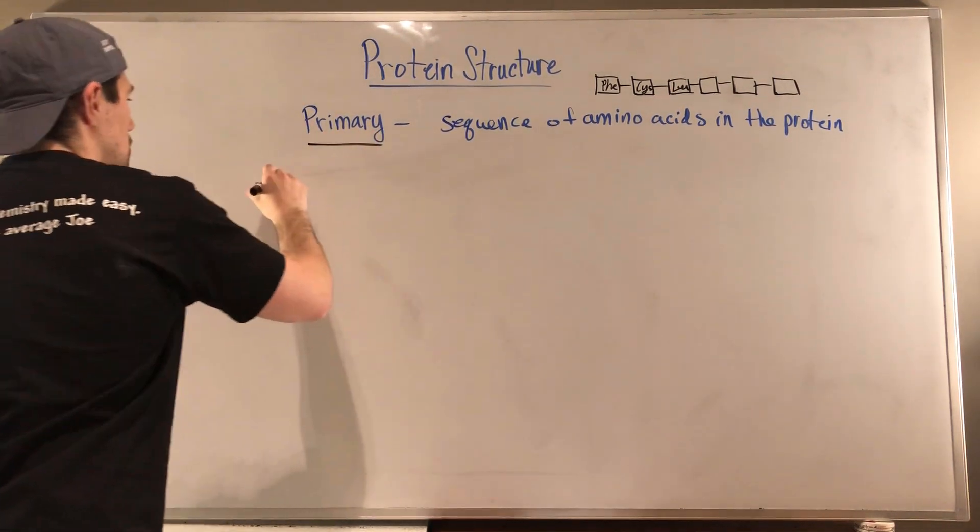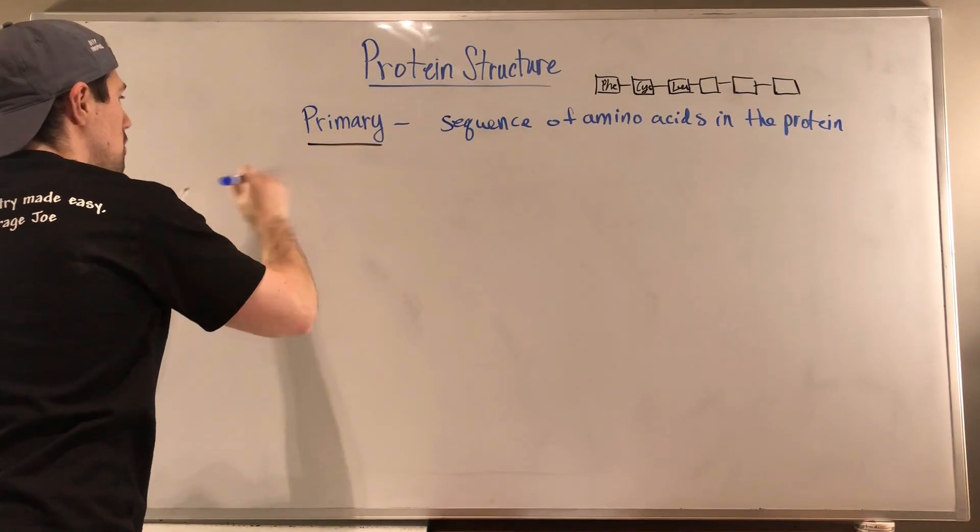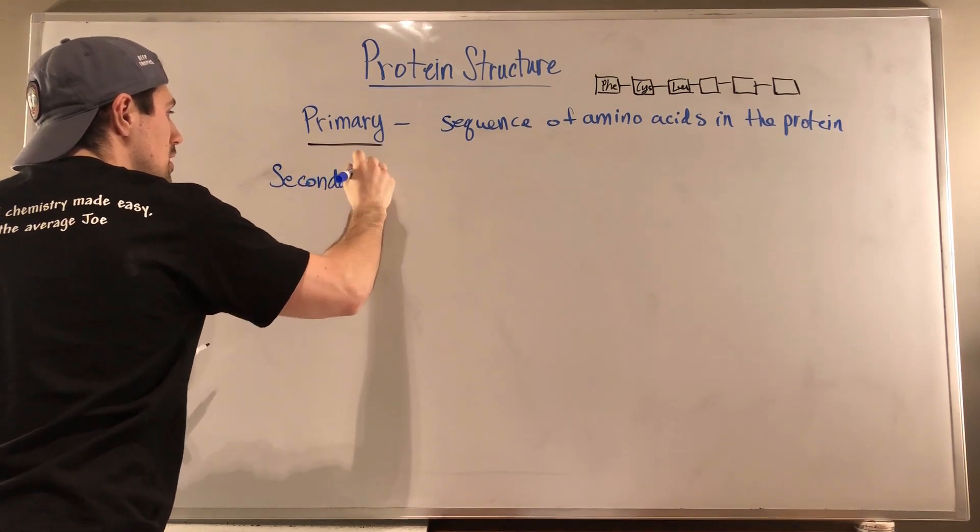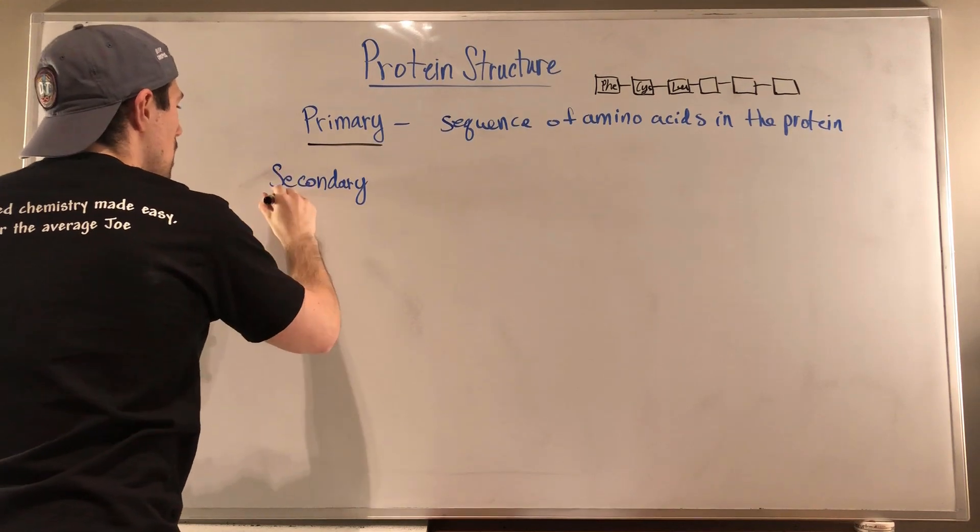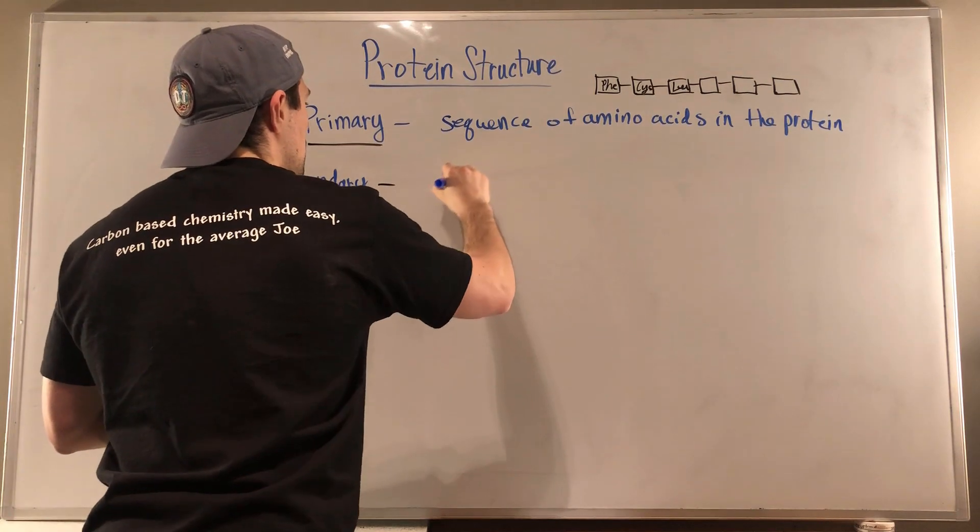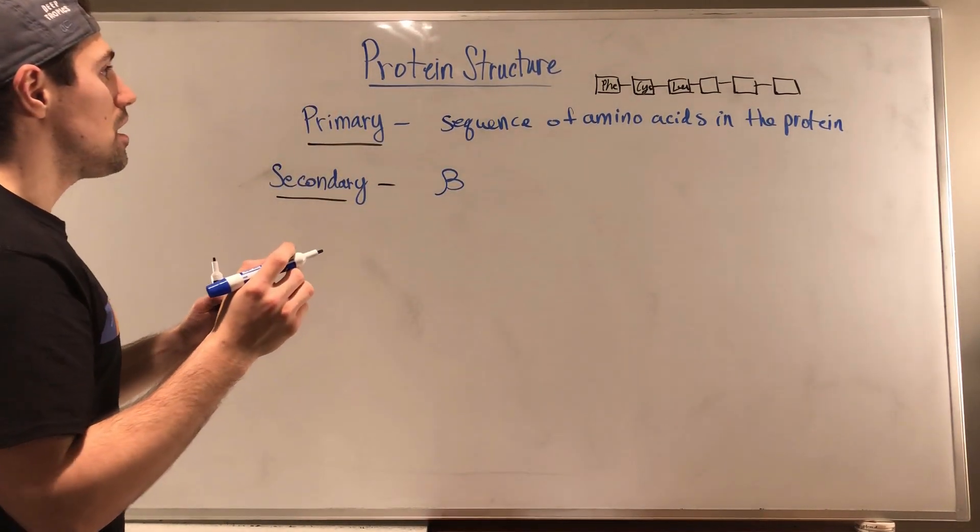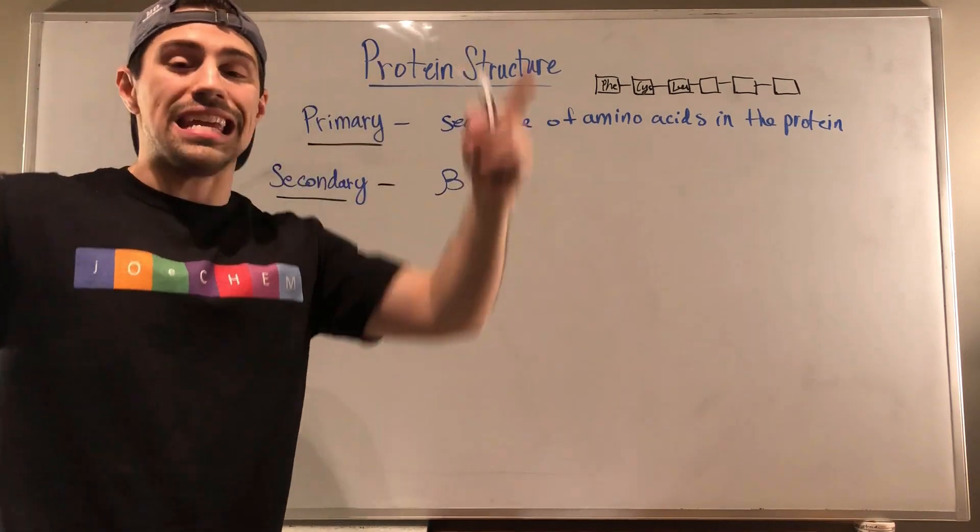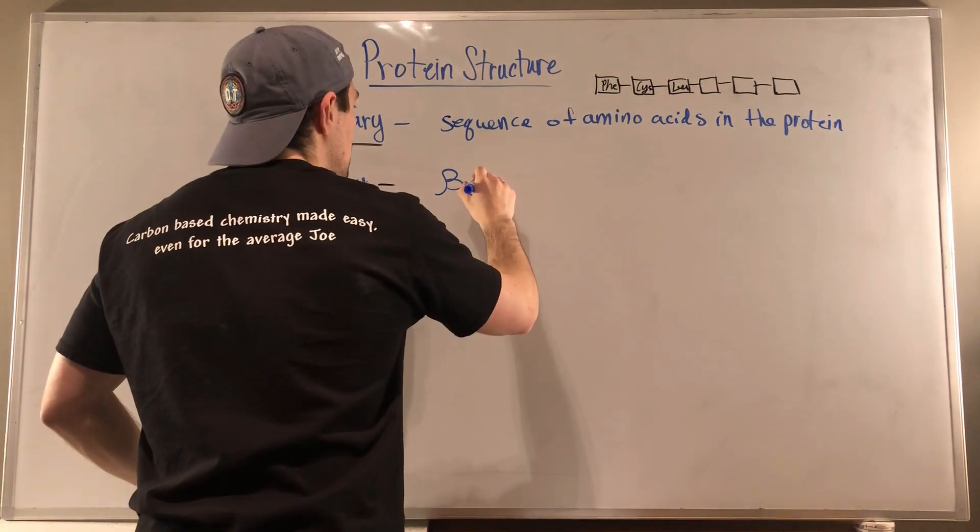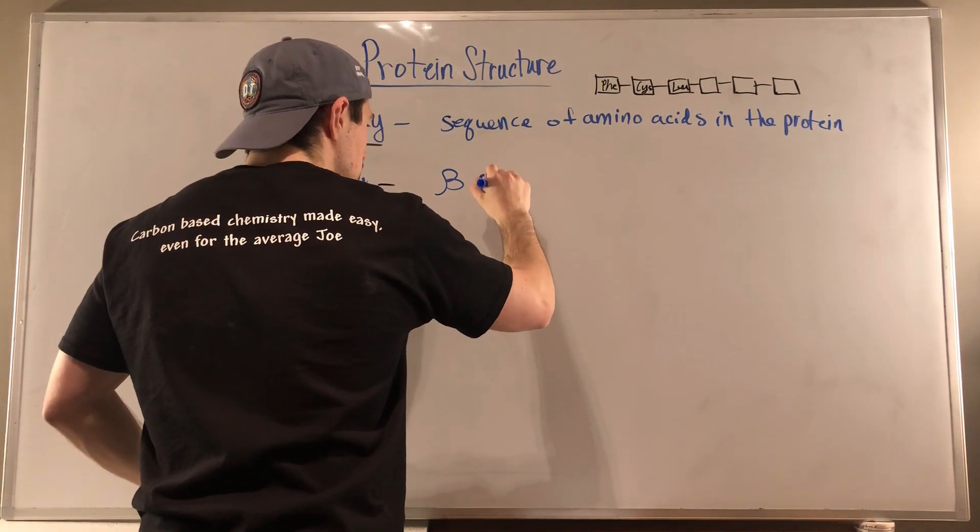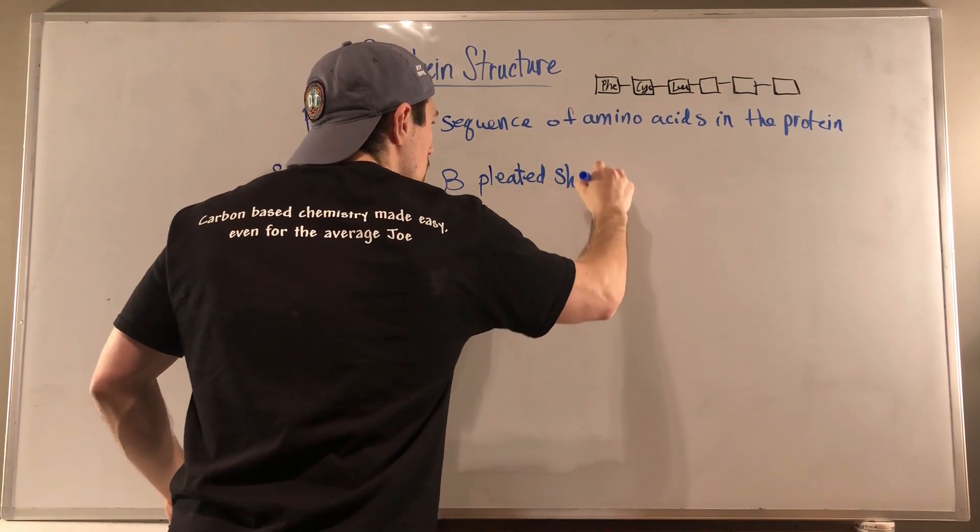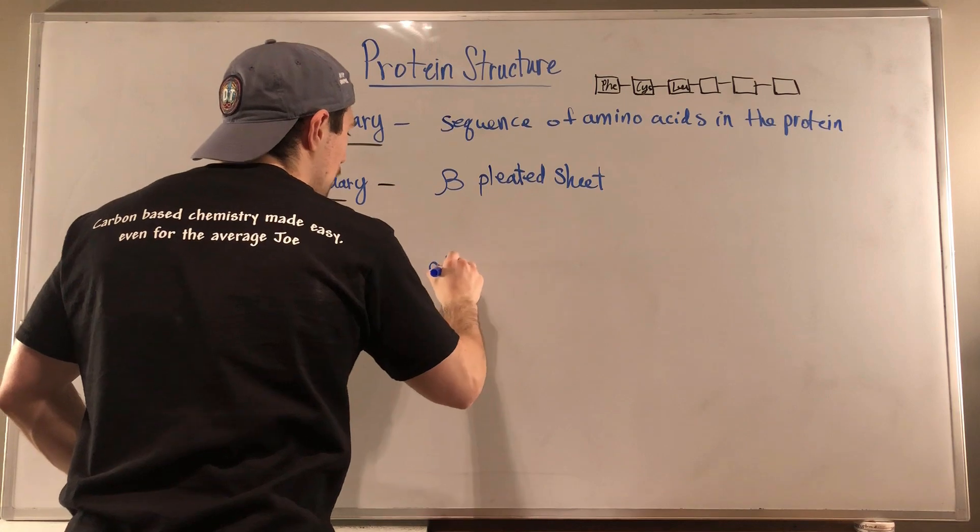So secondary structure. And this one I think is maybe the one that involves a little bit of organic explanation. So there's two types of secondary structure. You're probably familiar with both of them. This is involved with how the protein orients itself in space. You can have two different types: you can have a beta pleated sheet, or you can have what is called an alpha helix.